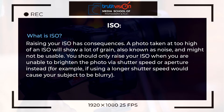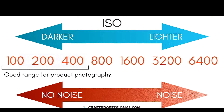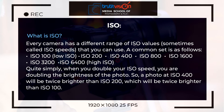Sometimes you may also use your shutter speed, and you will notice that with a longer shutter speed the subject may appear blurry, so we will also talk about how to set your shutter speed. Every camera has a different range of ISO values depending on the model you have.